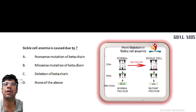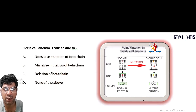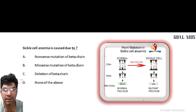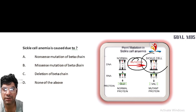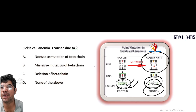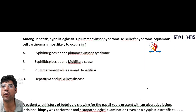Sickle cell anemia is a point mutation in the beta-globin gene — a missense mutation. Specifically, it involves the substitution of adenine for thymine in the sixth codon of the beta globin gene, resulting in abnormal hemoglobin. The normal protein contains glutamine, which is replaced by valine, leading to this point mutation.